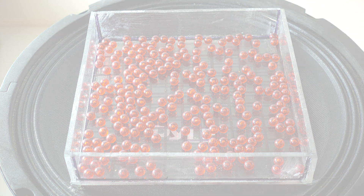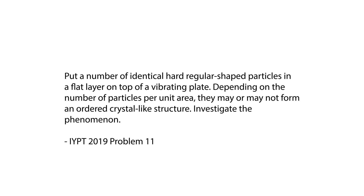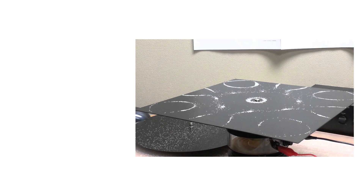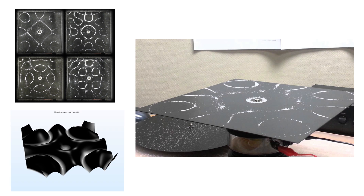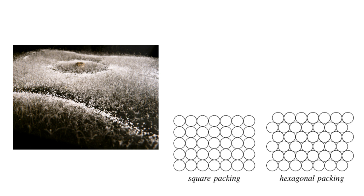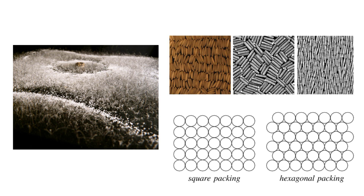Let us begin by examining our task. It asks us to put a number of identical, hard, regular-shaped particles in a flat layer on top of a vibrating plate, and depending on the number of particles per unit area, they may or may not form an ordered crystal-like structure, and it wants us to investigate this phenomenon. We can find many videos online that are similar — they usually demonstrate standing waves on a two-dimensional plate — but these demonstrations don't have hard, regular-shaped particles, as they always use sand or salt, and also it might not be in one layer on top of the vibrating plate. Our task is to see how these regular-shaped particles could generate a crystal-like structure when being shaped by this vibrating plate.